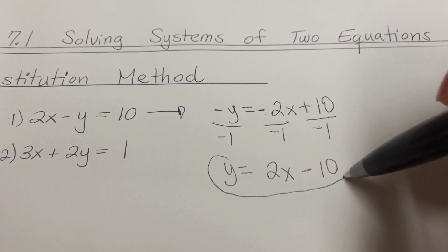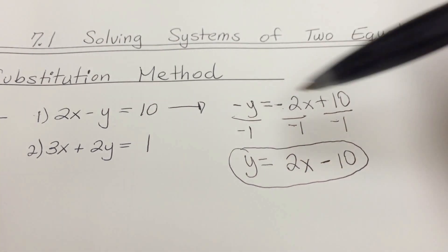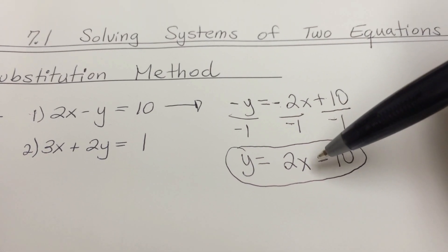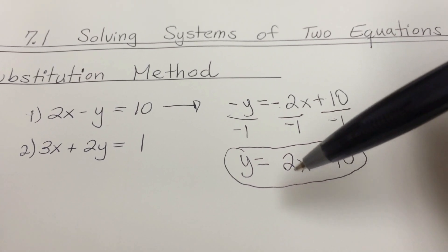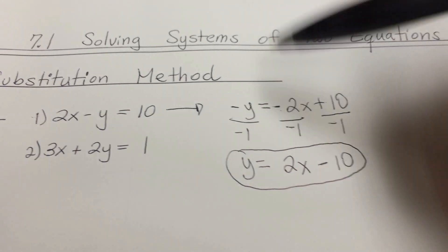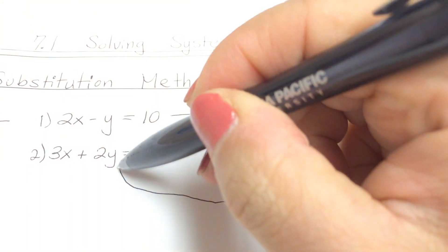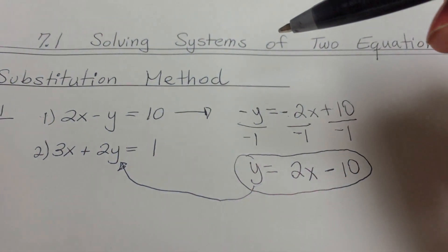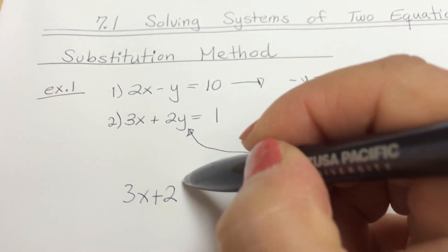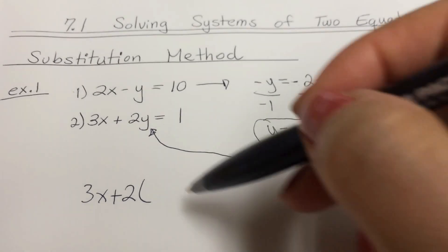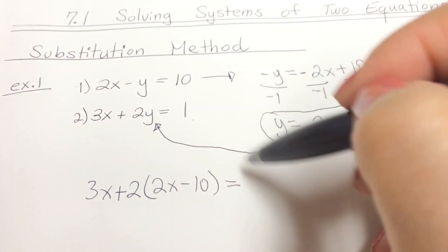I'm going to circle this because we'll come back to it later. With equation number 1 fixed up, I'm going to substitute it into equation number 2. Do not put it back into equation number 1, or you'll get a 0. Since this is y equals, we substitute this y into the equation, rewriting it as 3x plus 2 times (2x minus 10) equals 1.